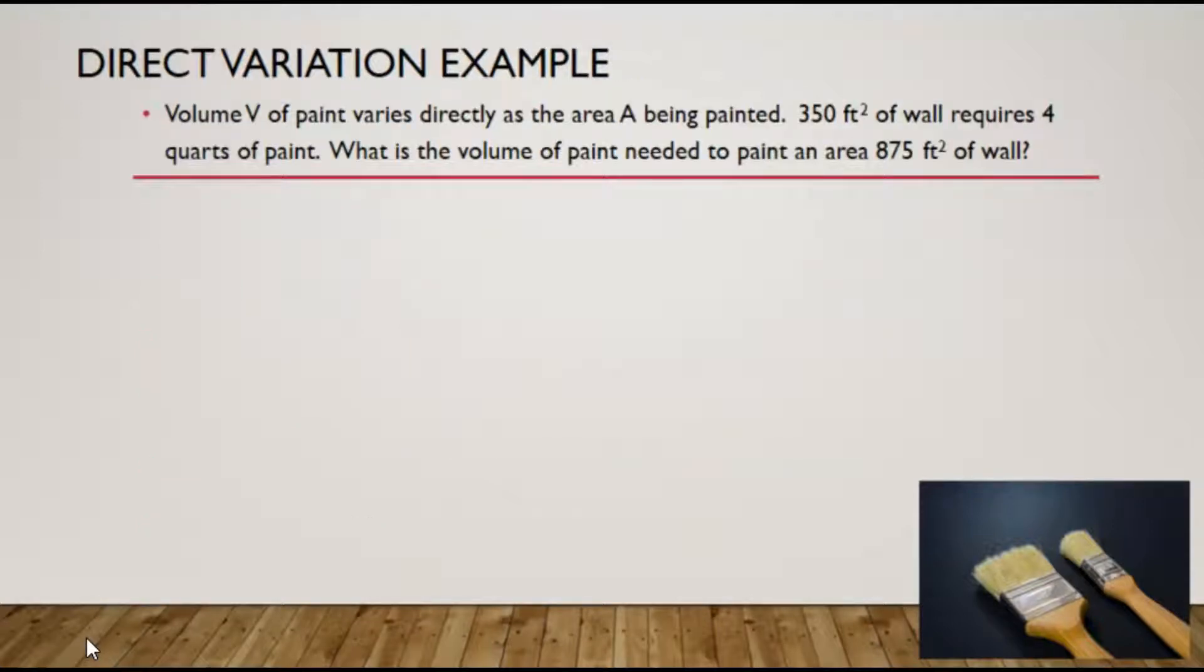There is another way to solve this direct variation problem that bypasses finding the value of k, or that constant of proportionality. The first step should be to write a word ratio to serve as a guide for your proportion setup.